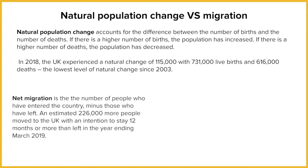If we look at migration, net migration is the number of people who've entered the country taken away from the number of people who've left the country. It's estimated that there were 226,000 people who came into the country who intended to stay for more than a year. Comparing these two numbers — 226,000 versus 115,000 — there are more people coming into the country than are being born in the country.